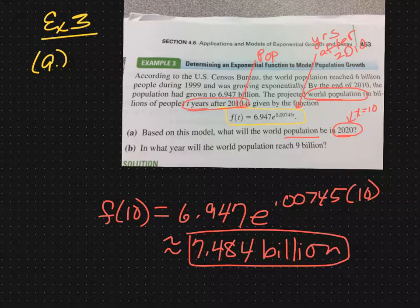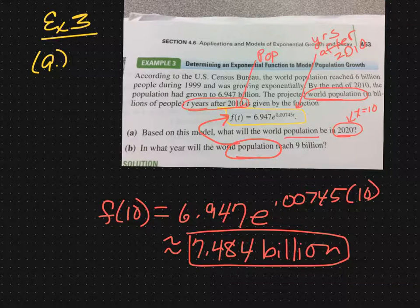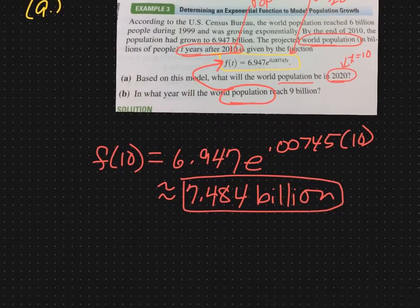Now in part B, it says, in what year would we expect the population to be 9 billion? Now we're not given a t, we're given the population, so we're given f(t). We're going to put the 9 in for f(t), and then we'll have an exponential equation to solve.